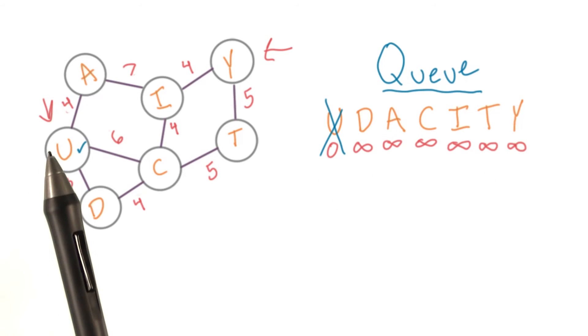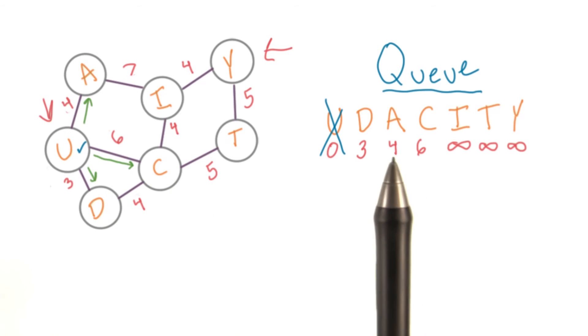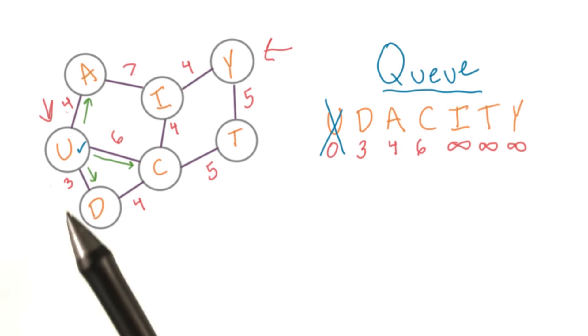From our starting node, we have several options. We will follow each edge and update the node on the other side with a distance value, which is just the weight of the edge.